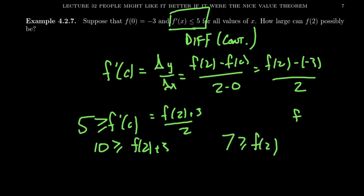Subtract 3 from both sides, we're going to get that 7 is greater than or equal to f of 2. Or if you prefer, we can write that as f of 2 is less than or equal to 7. In retrospect, that might not be so surprising. If we think about it in terms of motion, if at time equals 0, the car is located at marker negative 3, and it's moving at most 5 units per time, then after 2 units of time, the most it could have traveled would be 10 units, 2 times 5.